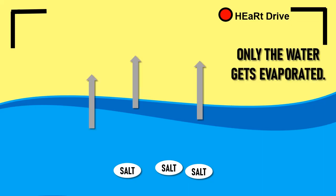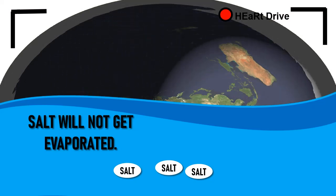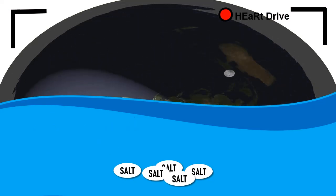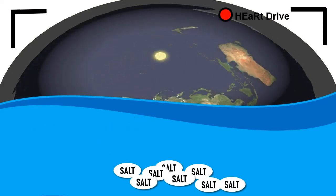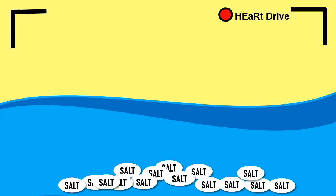The salt carried with water gets deposited on the ocean. When ocean or seawater evaporates, only the water gets evaporated. The salt remains as sediment without getting evaporated. As this process has been happening for millions and millions of years, the amount of salt has increased a lot. And this is the reason why seawater is salty.